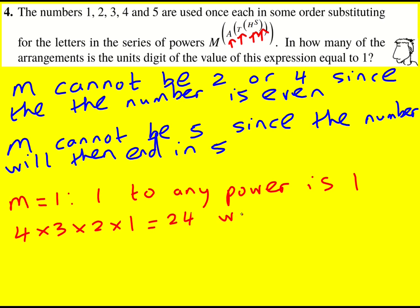There's going to be 24 ways of arranging 2, 3, 4, and 5 into A to the T to the H to the S. So that's not our answer, but that is part of the way there.